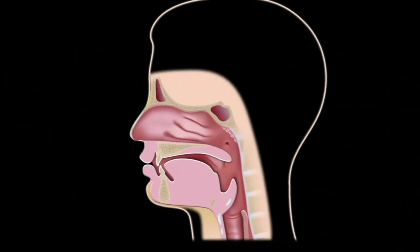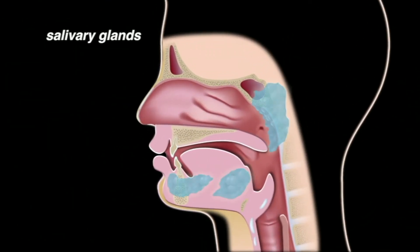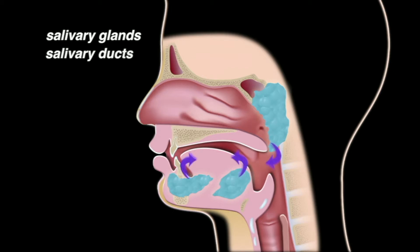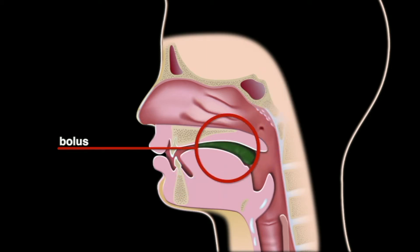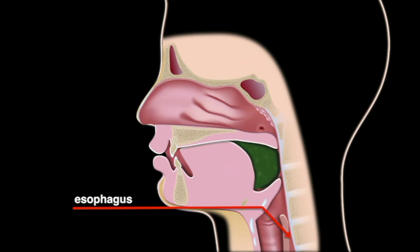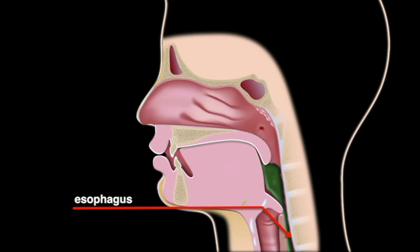The salivary glands are located to the side of and underneath the mouth. Salivary ducts lead to the mouth, releasing saliva into the oral cavity. Saliva moistens food, helping to create a bolus that is easily swallowed, and it also lubricates the esophagus, easing passage of the bolus.